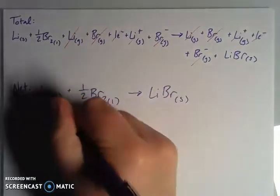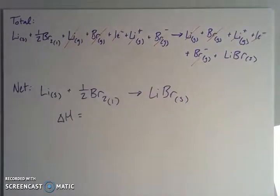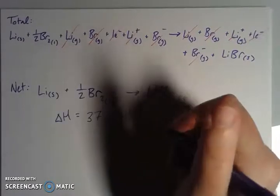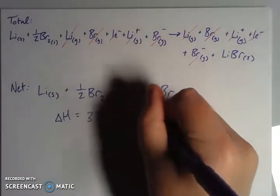What I have left over in my net or the target is my lithium solid plus my half bromine gives me lithium bromide. When I add together all of those delta H's along the way, the first ionization energy for lithium, the sublimation energy, the breaking apart of the bromine as well as evaporating it, the negative electron affinity, and the lattice energy, I add those all together, and I end up with 371 minus U, U for my internal energy, kilojoules per mole.